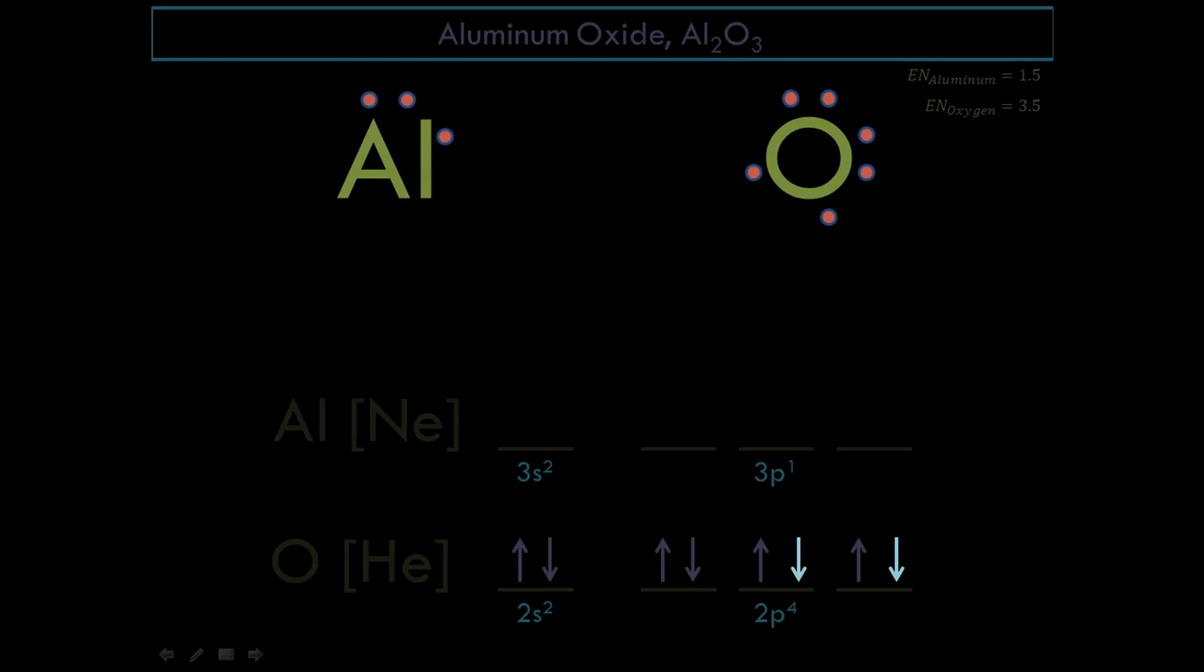This is the electronegativity value for each aluminum, 1.5. Oxygen, 3.5. The electronegativity difference is big. And it is an ionic compound, not a molecule.